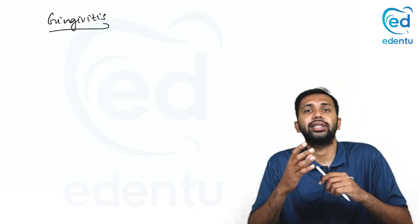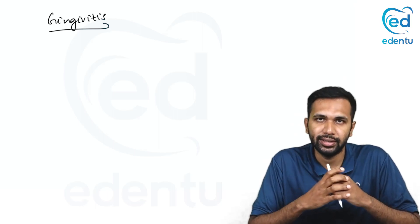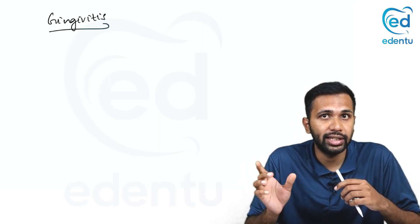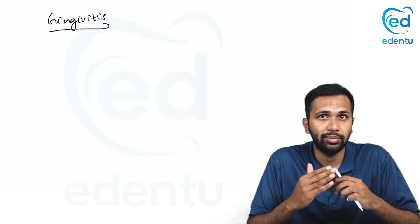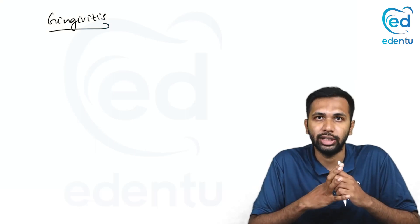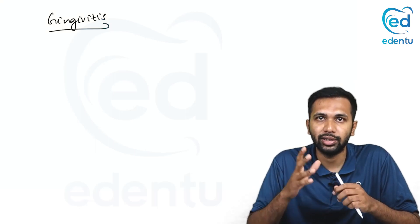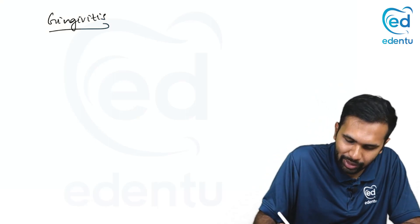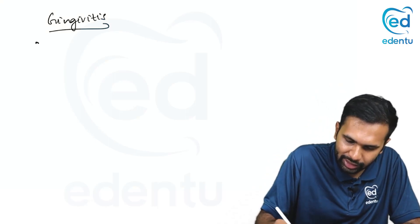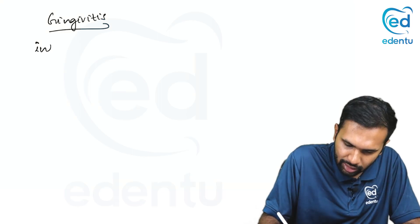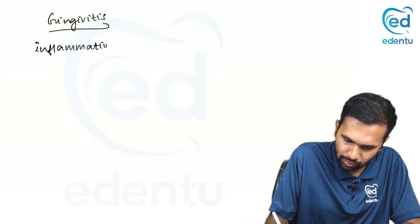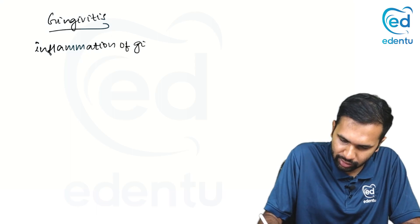So firstly, what is gingivitis? 'Itis' — if you attach 'itis' to any word, it means inflammation of that particular region. So gingivitis can be simply defined as the inflammation of gingiva.